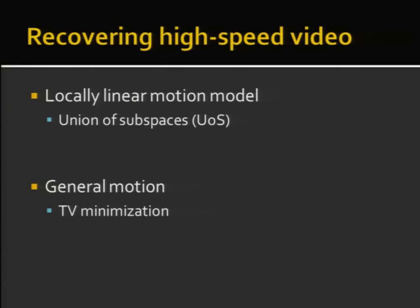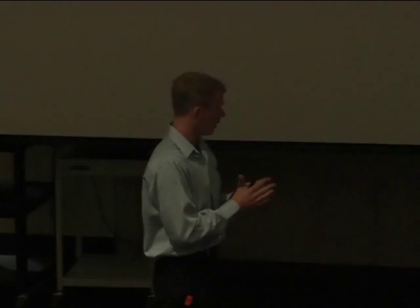For a more general class of motion without those assumptions, we're limited to about 6 to 16x compression. The video priors I'm going to use are twofold: if my scene motion is locally linear — in small patches I can approximate motion as linear — I'm going to use a union of subspaces. If I have general motion, I'll use a different reconstruction based on TV minimization.